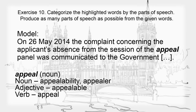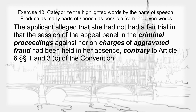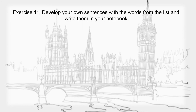As a noun, it has some other forms: Appealability, Appealability-a. Adjective: Appealable. Verb: Appeal. The applicant alleged that she had not had a fair trial; the session of the appeal panel in the criminal proceedings against her on charges of aggravated fraud had been held in her absence, contrary to Article 6, Paragraph 1 and 3 of the Convention.